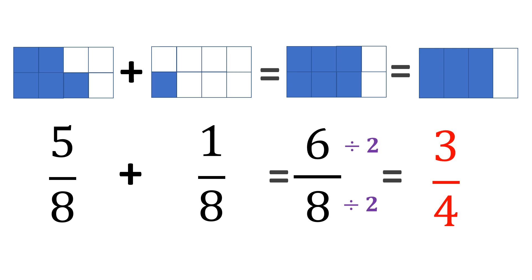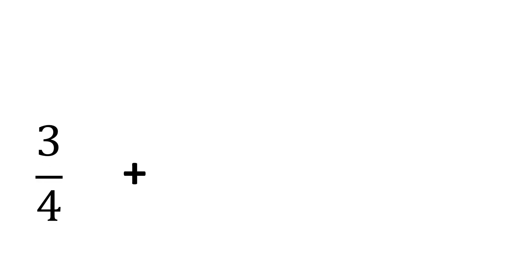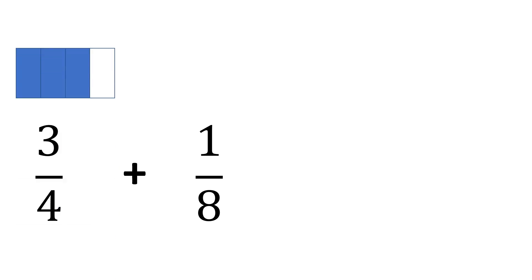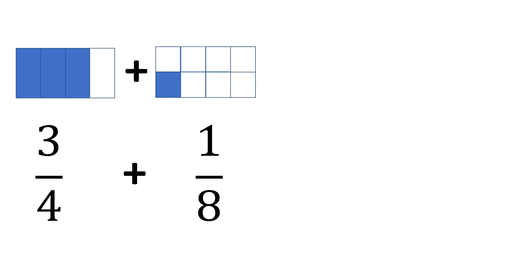Another example: 3 fourths plus 1 eighth. This time the denominators are not the same, so we cannot simply add the numerators. But this is not that hard because 8 is just a multiple of 4, meaning we can multiply 3 fourths by 2 to make the same denominator, 8. Before that, let us visualize these two fractions. We have 3 shaded parts out of 4, plus 1 shaded part out of 8. As you can see in the figures, they are totally different — so how can we combine them if they don't fit with each other?